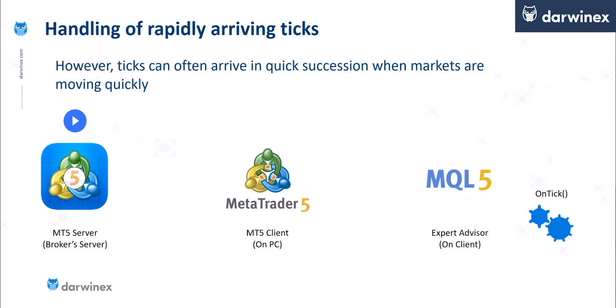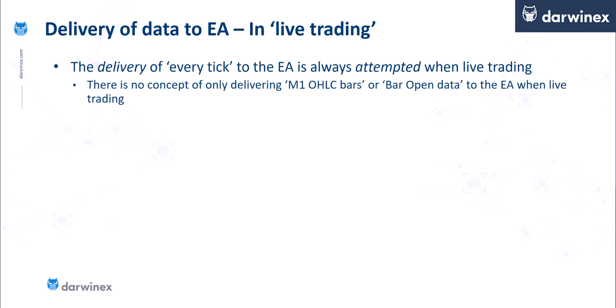However, in a live context, ticks can often arrive in quick succession, especially when the markets are moving quickly — during the main trading sessions and especially when economic news has recently been released. If the previous tick is still being processed by the OnTick function at the time the second tick arrives, this second tick gets discarded. It won't be processed by the EA. So although there's an attempt to deliver every tick to the EA, they won't all get processed in a live context.